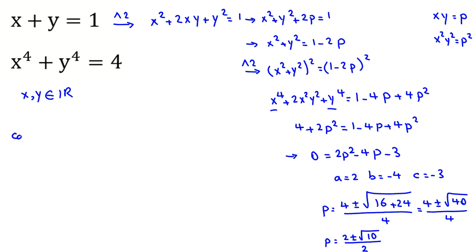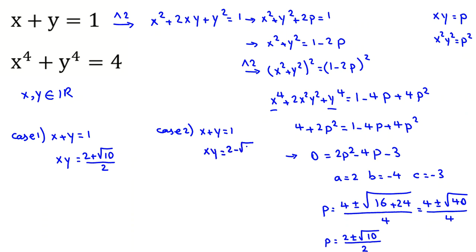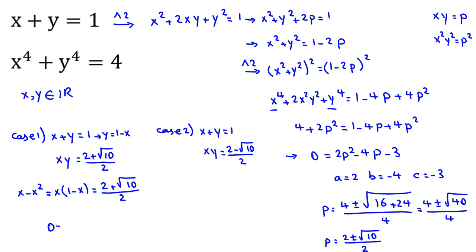So we have two cases. In case 1, x plus y is 1 and the product xy equals 2 plus root 10 over 2. In case 2, x plus y is 1 and xy equals 2 minus root 10 over 2. We substitute y equals 1 minus x, so x times 1 minus x equals the product p. This gives x minus x squared, and rearranging: x squared minus x plus p equals 0.